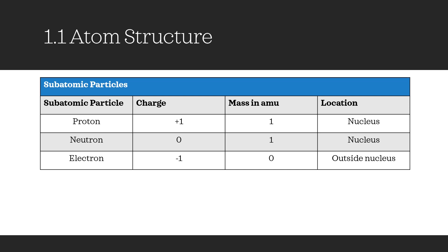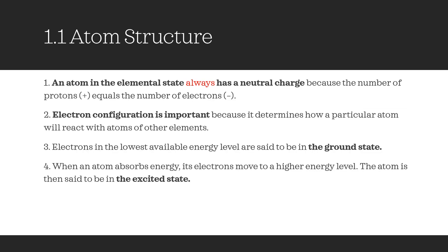Here you can see four main properties that you have to know regarding atoms. First, an atom in the elemental state always has a neutral charge because the number of protons equals the number of electrons. Second, the electron configuration is important because it determines how a particular atom will react with atoms of other elements. Third, electrons in the lowest available energy level are said to be in the ground state. And last but not least, when an atom absorbs energy, its electrons move to a higher energy level — the atom is then said to be in the excited state.